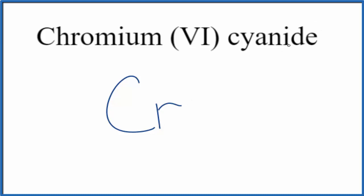And then cyanide - when you see cyanide, you're not going to find this on the periodic table. It's a polyatomic ion. You either memorize that the cyanide ion is CN, and the whole thing has a 1- ionic charge.